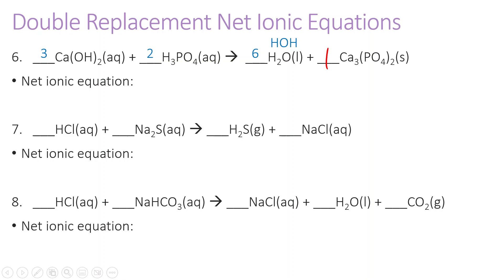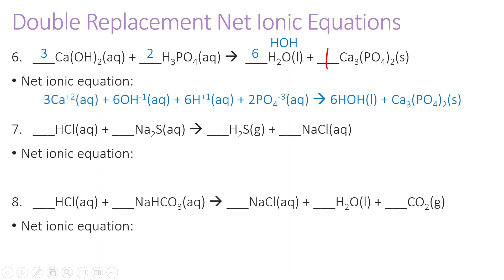To write our net ionic equation, we start with everything that is aqueous and form all of our products. Notice that both products are a solid and a liquid, so none of these ions are going to be spectator ions. We have three Ca2+ aqueous, six OH− aqueous, six H+ aqueous, and two PO4(3−) aqueous forming water and calcium phosphate solid. This is actually an acid-base reaction with neutralization — that's why we have six hydroxides and six hydrogens forming neutral water. There are no spectator ions in this equation.